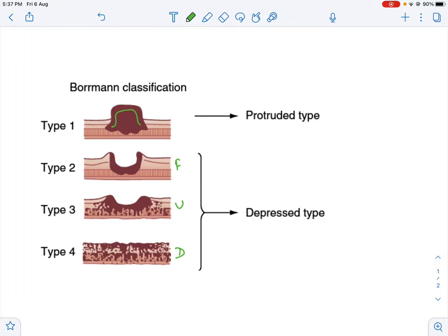So type 1 is also called protruded type, and type 2, 3, 4 are called depressed types.